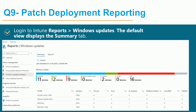Reporting: after patch deployment, go to the Reports tab in Intune. There is a default summary showing Windows Update status — in-progress, success, error, rollback, cancelled, and more — along with the profile name and Windows version. For further detail, click on Reports to get a device-by-device view with each device's status.